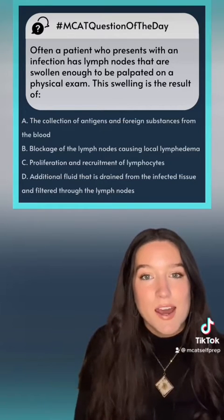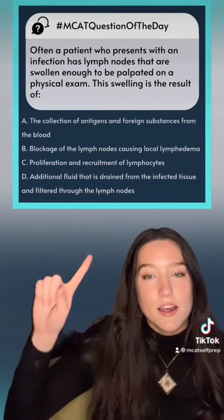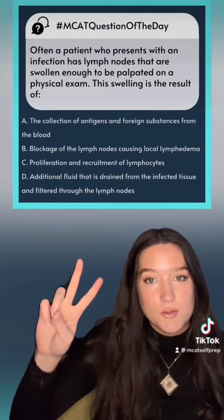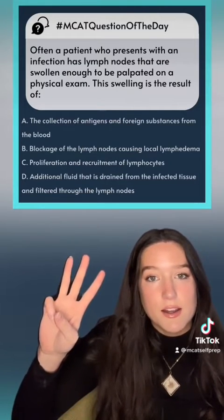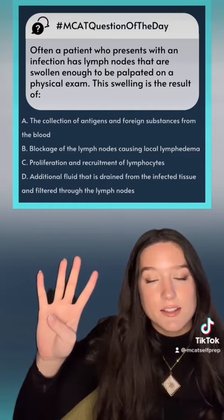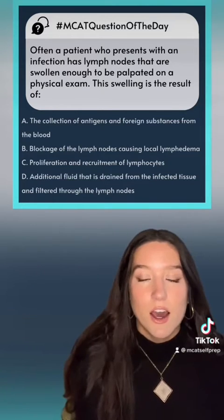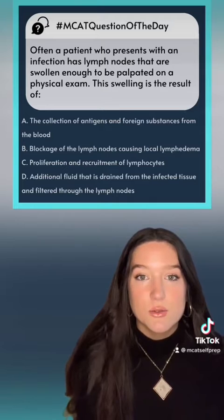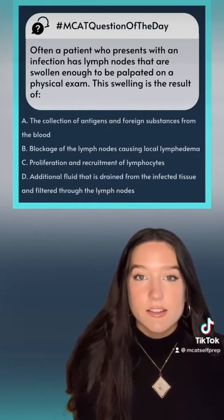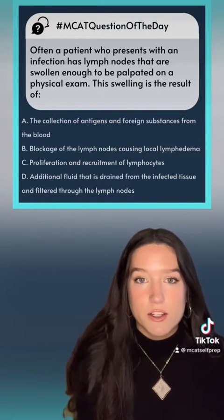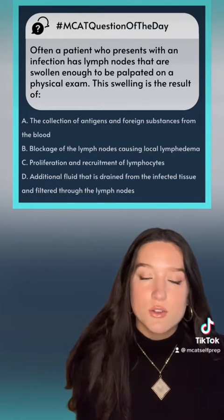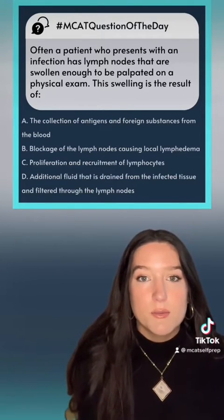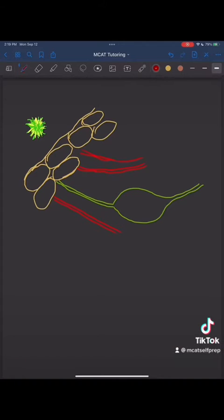The lymphatic system has four roles: it maintains fluid pressure, it plays a role in the immune system, it circulates fats across the body, and it removes excess cell debris. A great way to approach this question is to look at what the passage states — the patient presents with an infection — which gives us a hint that the answer should relate to the lymphatic system's role in the immune system. Let's review how the lymphatic system helps the immune system.